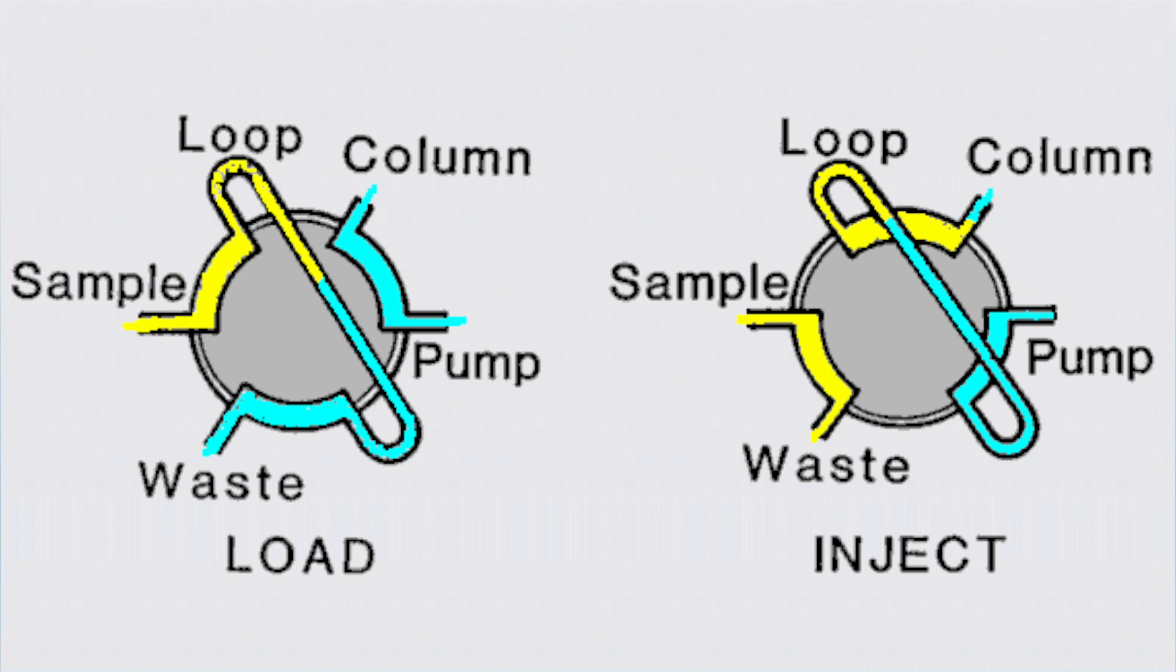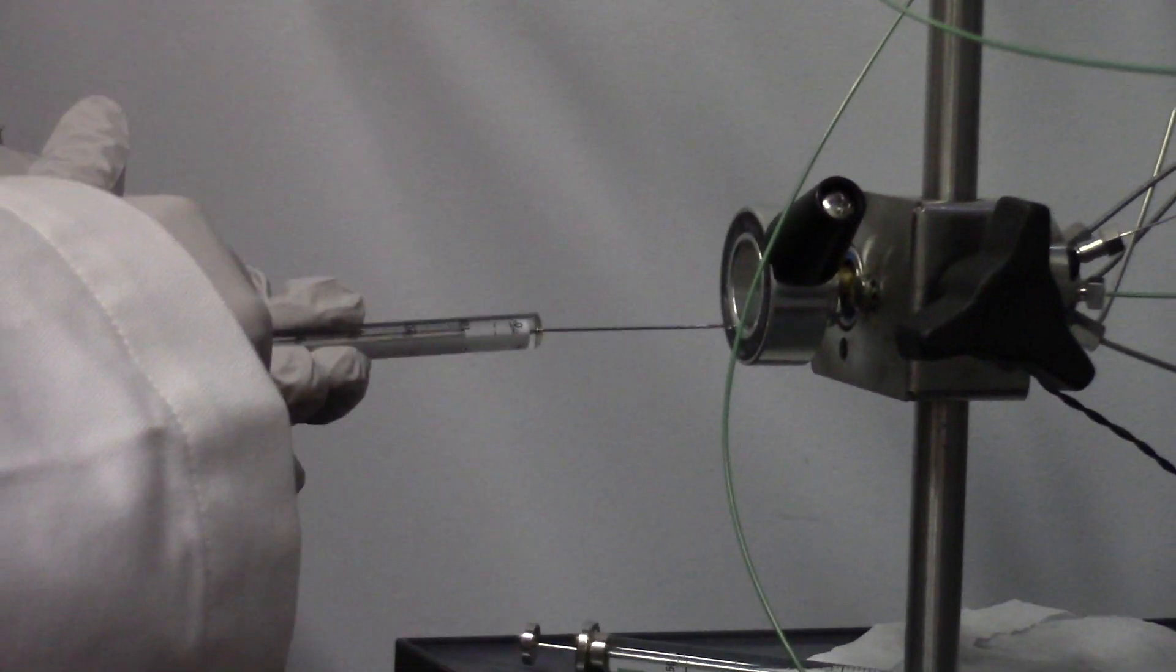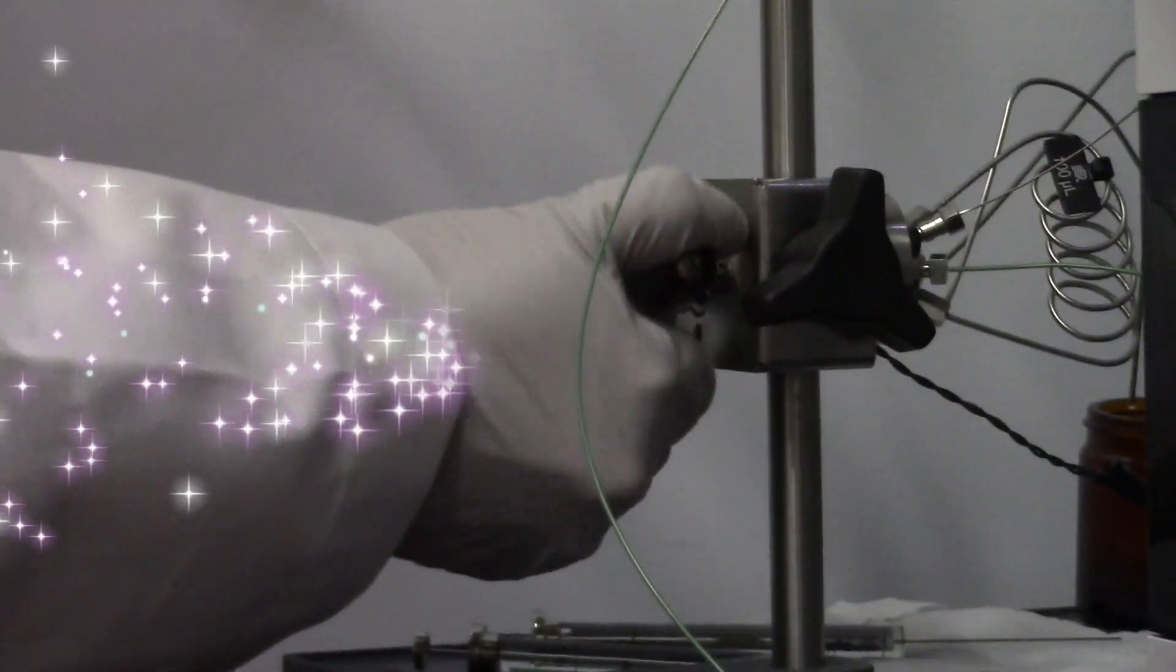If the lever is in the wrong position, it will not allow your sample to be taken up into the instrument. Make sure there are no air bubbles in the syringe. Once fully injected, move the lever into the inject position. The HPLC will then do its thing.